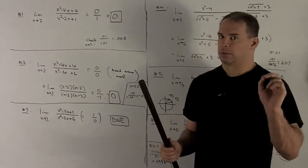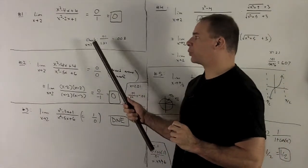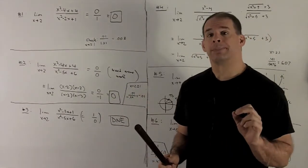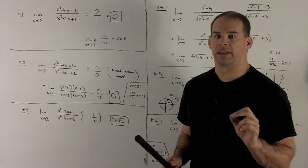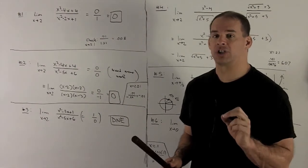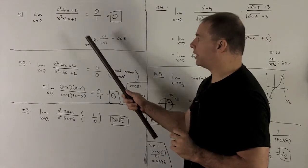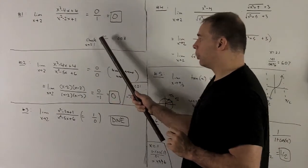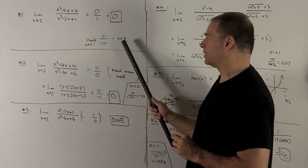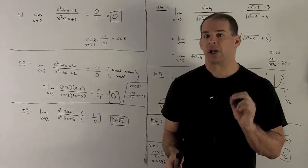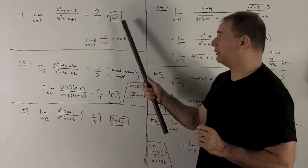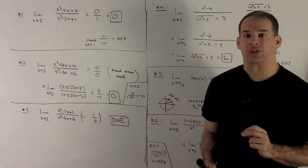As a side, we can always check this. What do I do? I take a number that's very close to the point where we're taking the limit at, evaluate the function, and see what comes out. So if I put 2.1 in for x, I'll get 0.01 over 1.21, and that's going to be 0.008. That's very close to 0, so I believe 0 is a good answer.